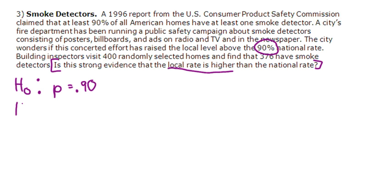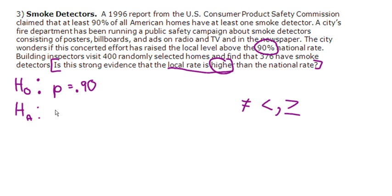The alternative hypothesis is what we're testing the norm against. When doing alternative hypotheses, you can use the not-equal sign, the less-than sign, or the greater-than sign. You decide by looking at what they're asking. In this case it says: is the local rate higher than the national rate? So I'm going to use greater than. I stick with the population, so I'll write: p is greater than 0.90. Those are my hypotheses.